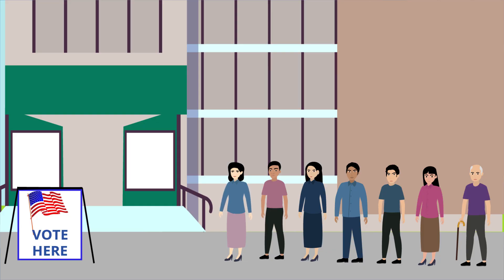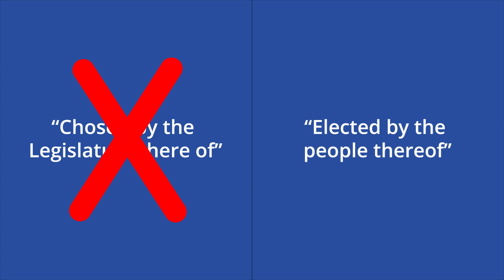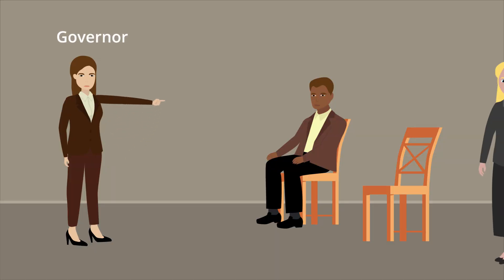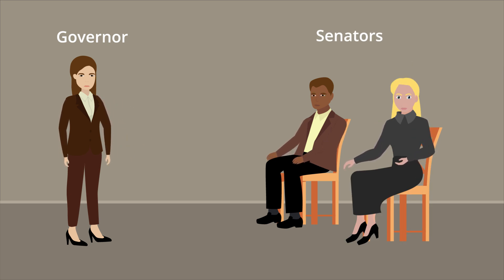The 17th Amendment states that Senators will be elected to six-year terms by popular vote. The amendment restates the first paragraph of Article 1, Section 3 of the Constitution and replaces the phrase 'chosen by the legislator thereof' with 'elected by the people thereof.' It also allows the executive authority of each state to temporarily appoint a Senator in the event of a vacancy until a general election occurs, if they have authorization from the state's legislator. However, it specifies that the amendment does not affect the election or term of Senators elected before it is officially ratified.